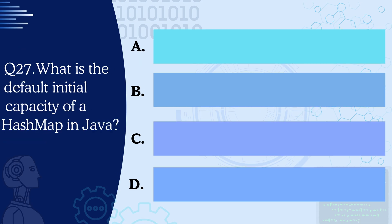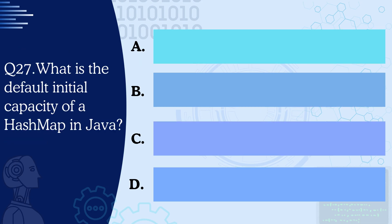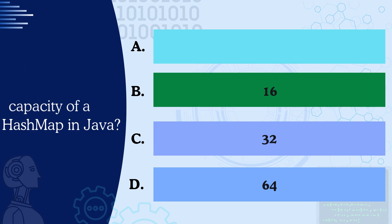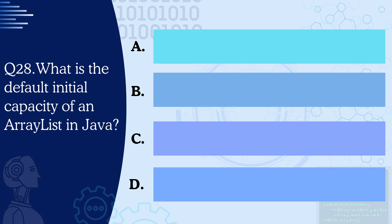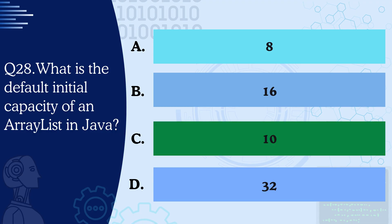Question 27: What is the default initial capacity of a HashMap in Java? A) 8, B) 16, C) 32, or D) 64? The correct answer is B — 16. Question 28: What is the default initial capacity of an ArrayList in Java? A) 8, B) 16, C) 10, or D) 32? The correct answer is C — 10.